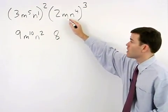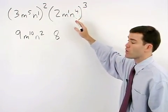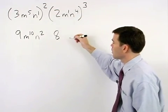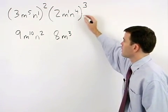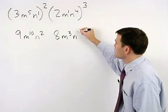Think of m as m to the first, and multiply each of the exponents times 3. So 1 times 3 is 3, and we have m to the third. And 4 times 3 is 12, so we have n to the twelfth.